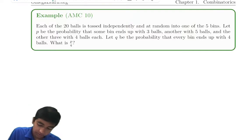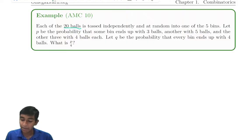Now let's move on to another interesting example that uses both combinations and probability. Each of 20 balls is tossed independently and at random into five bins. Let p be the probability that some bin ends up with three balls, another with five, and the other three with four balls each. Let q be the probability that every bin has exactly four balls. What's p over q?